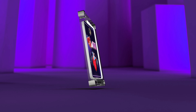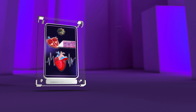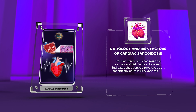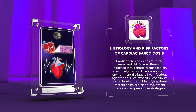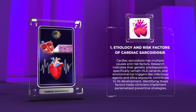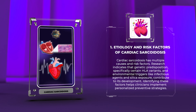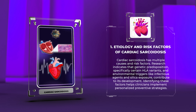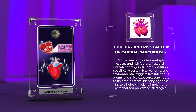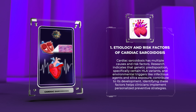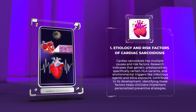Cardiac sarcoidosis has multiple causes and risk factors. Research indicates that genetic predisposition, specifically certain HLA variants, and environmental triggers like infectious agents and silica exposure, contribute to its development. Identifying these factors helps clinicians implement personalized preventive strategies.